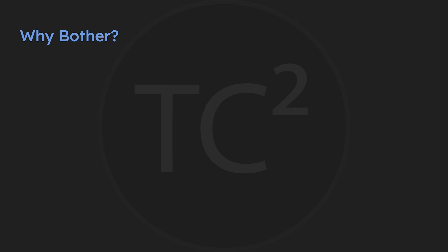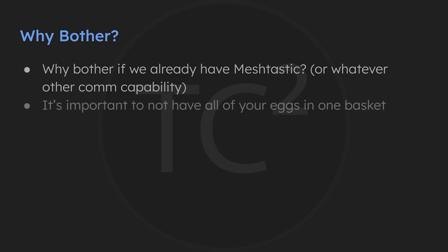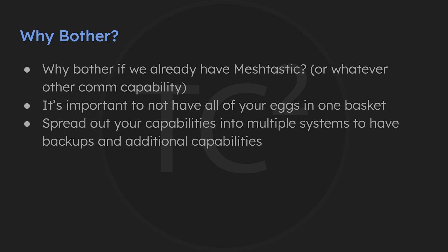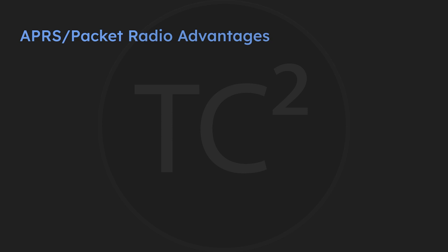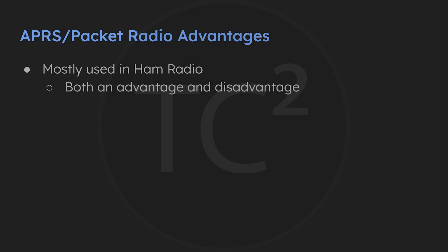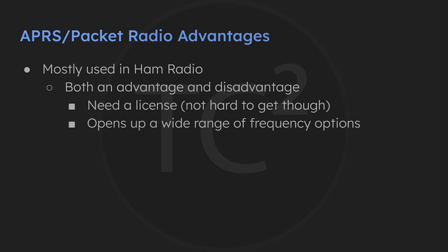So why are we bothering with this when we already have Meshtastic? It's important to not have all of your eggs in one basket and spread out your communications capabilities into multiple systems, including different types of systems, as every type will have its own pros and cons. What are the advantages of APRS or packet radio over Meshtastic? The first one is both an advantage and disadvantage — it's used in ham radio. The downside means you need to be licensed, but having that license means you're open to a wide range of frequencies and device options.